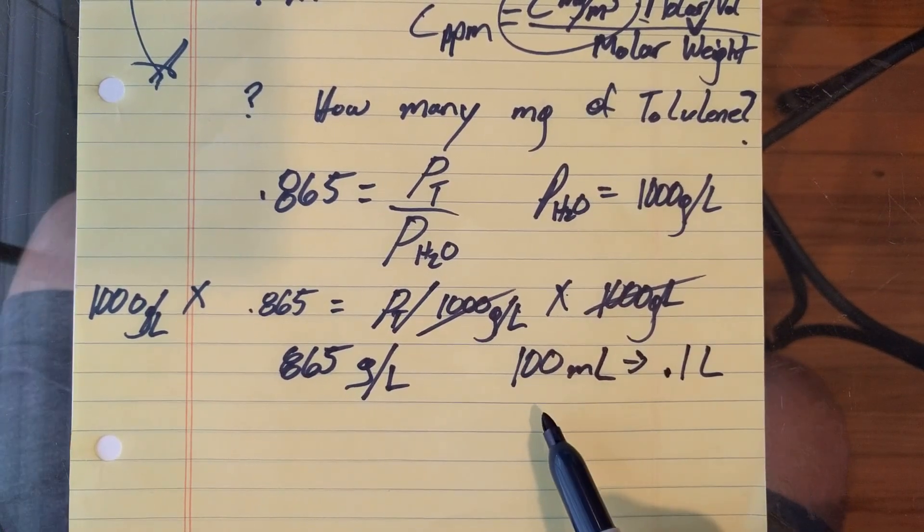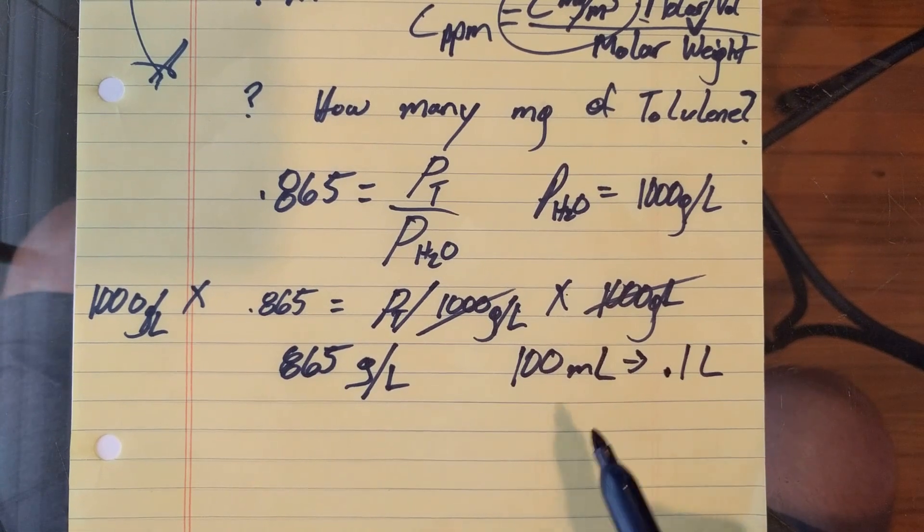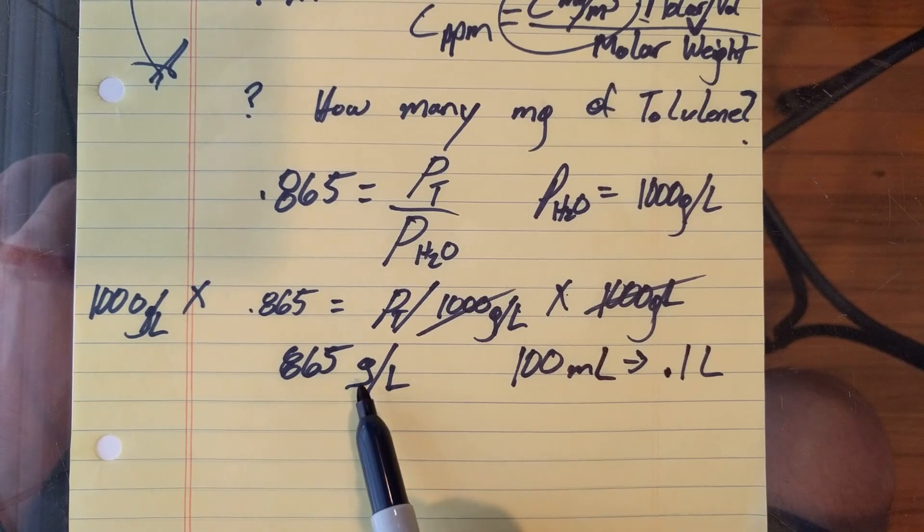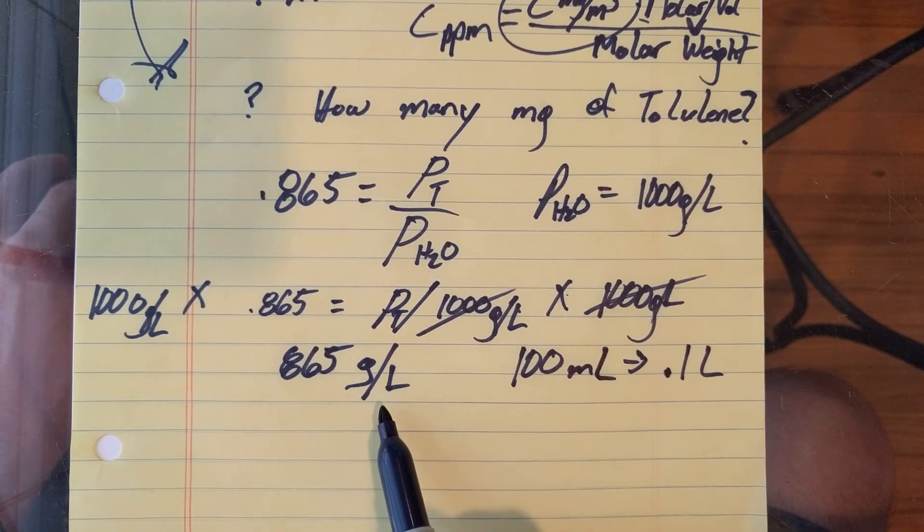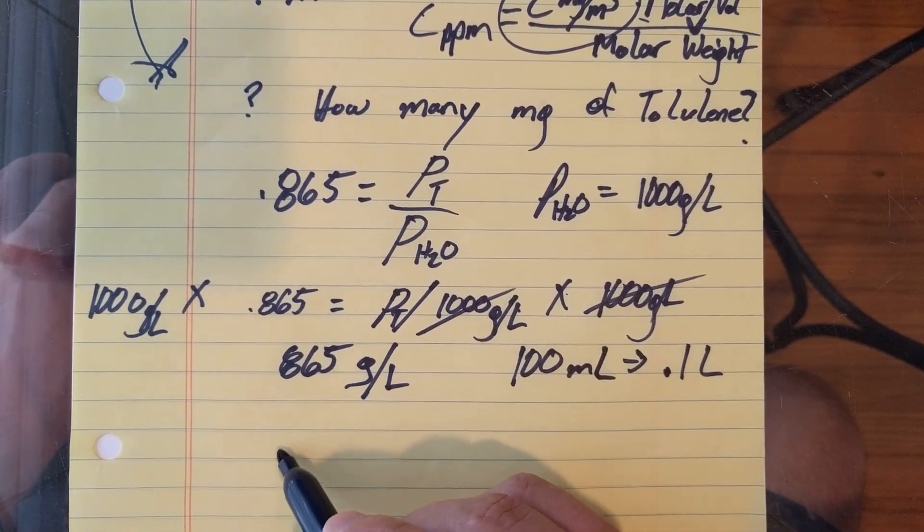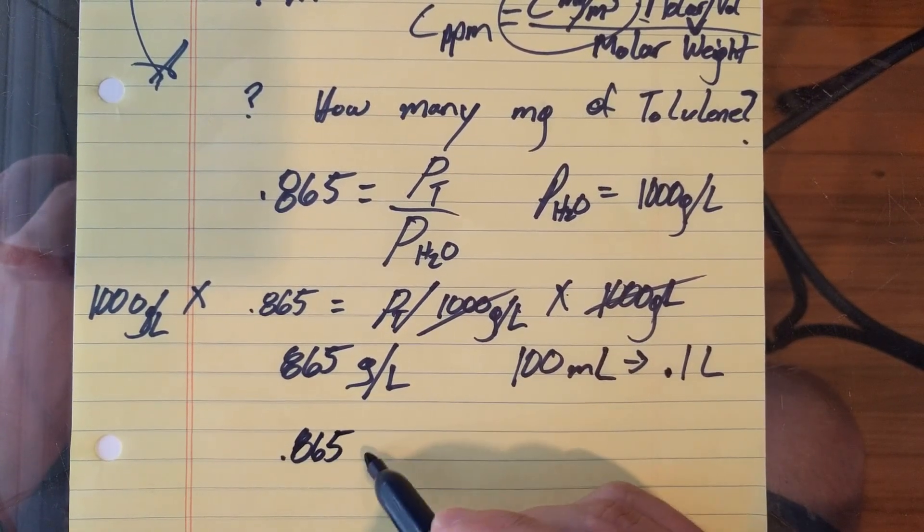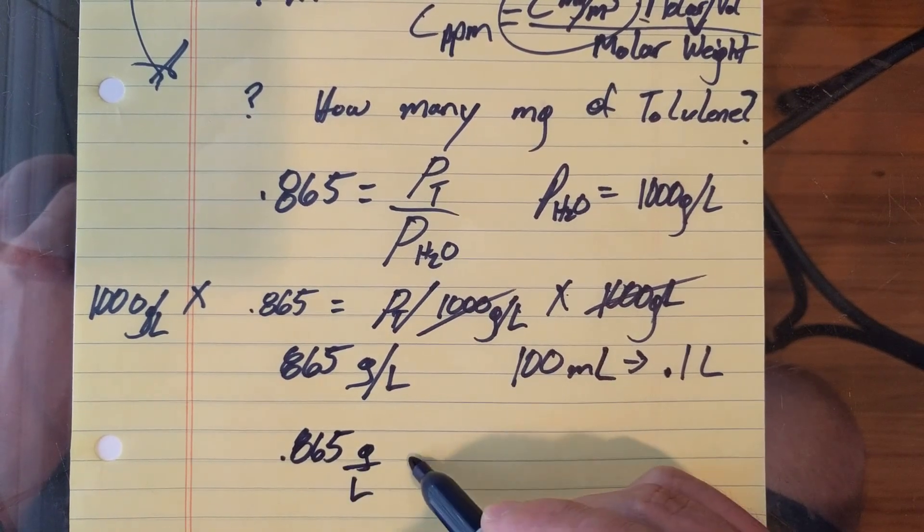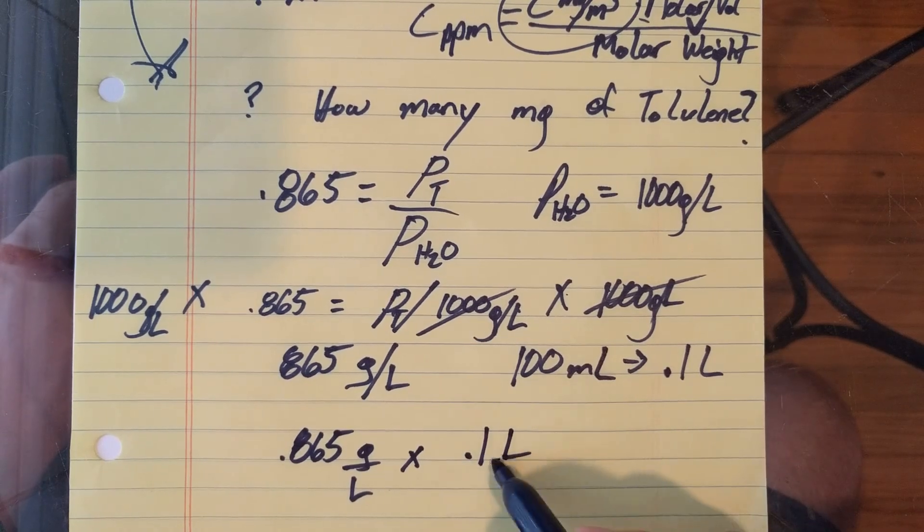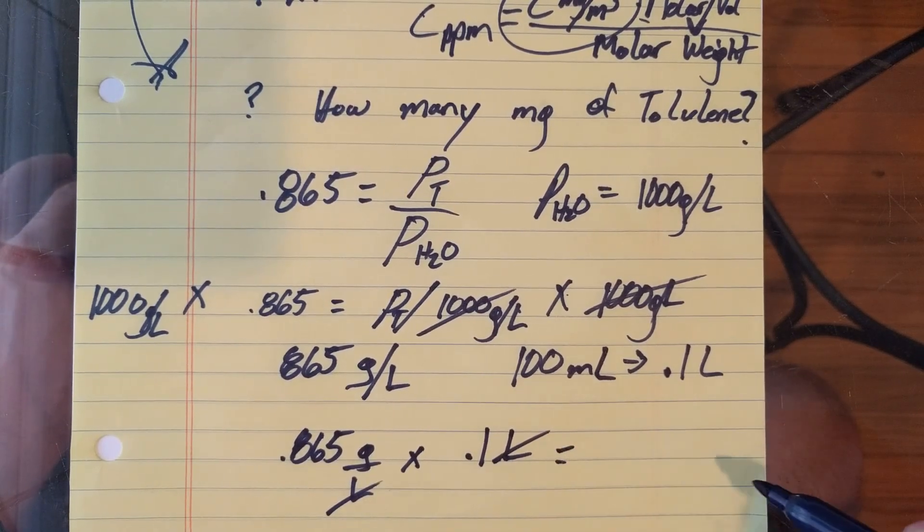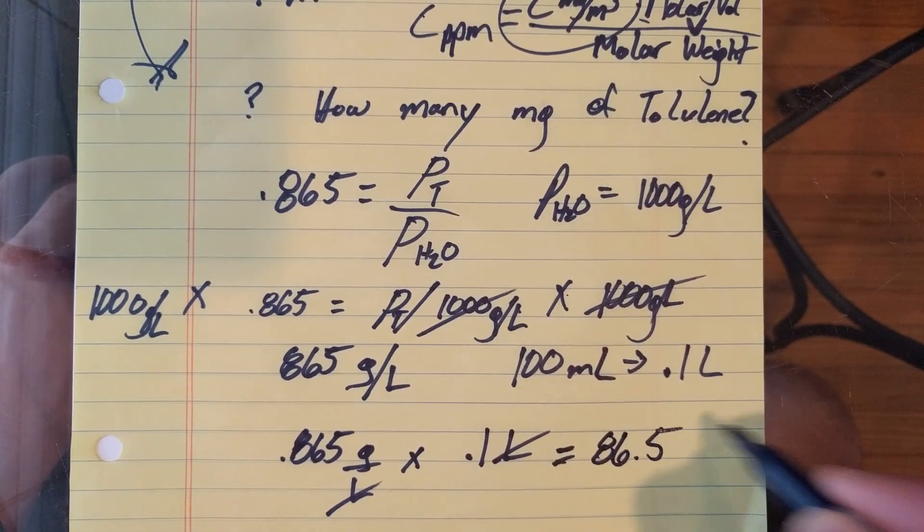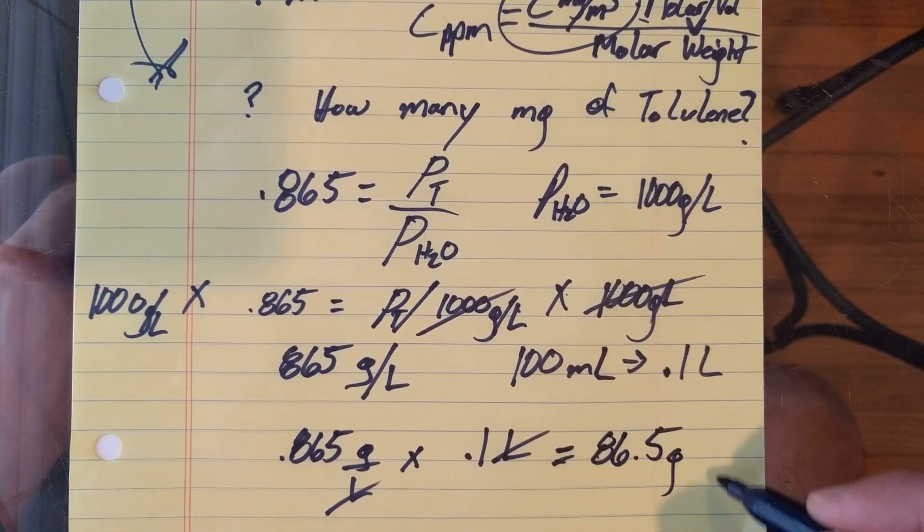This is 0.1 liter, because there's 1,000 milliliters in a liter. So now we've got 865 grams per liter is the density of toluene, and then we have 0.1 liters of toluene. So if we take 865 grams per liter and multiply by 0.1 liters, our liters will cancel, and we will get 86.5 grams of toluene.